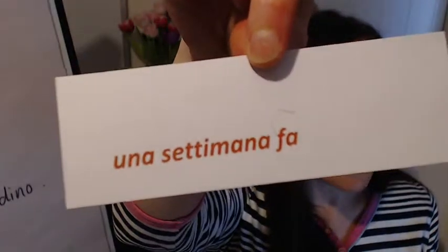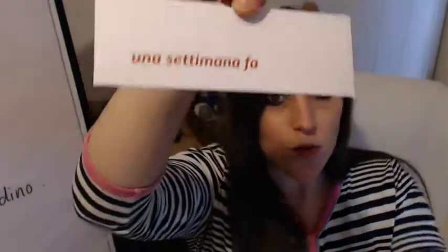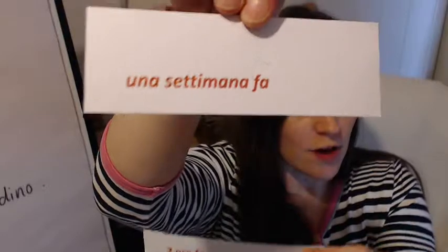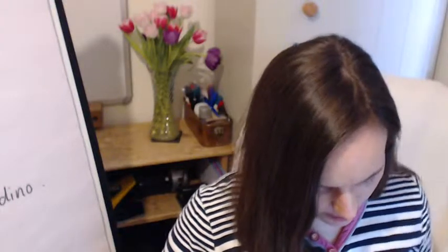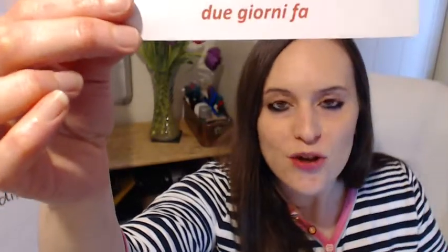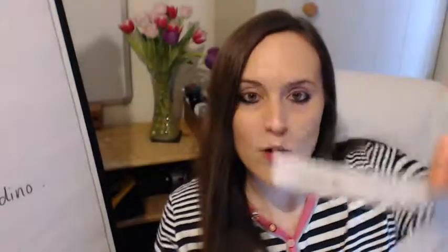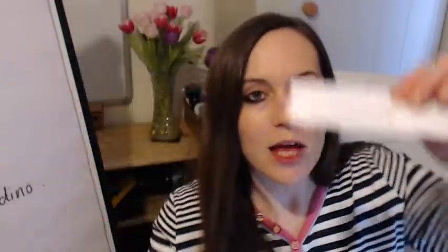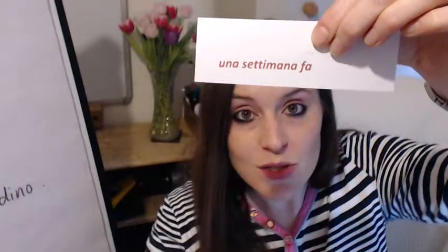Una settimana fa — one week ago. And then we've got due giorni fa — two days ago. So we've got due ore, due giorni, e una settimana fa. If this was 'two weeks ago', we would change una to due and we would change settimana to settimane.